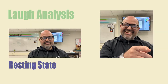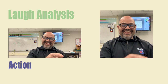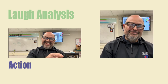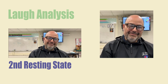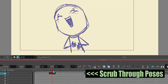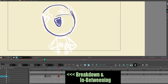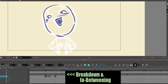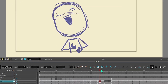Laughing usually starts with a resting state before some type of recognition. Then you see lots of bouncy action, followed by some sort of recognition, and then you go back to the resting state. I suggest that you illustrate a handful of extreme poses for your animation, and then scrub through them before you spend any real time animating. After timing out your poses, you can break them down and in-between them. The areas with big action are great for exaggeration and arcs, and you can also cycle some of those frames to get that bouncy feel when we laugh.